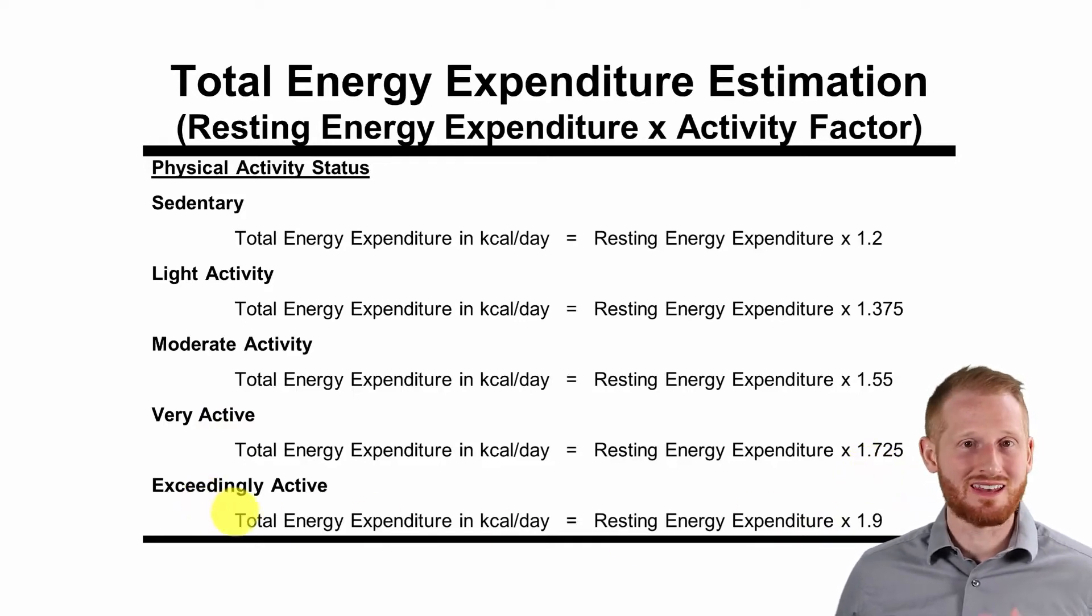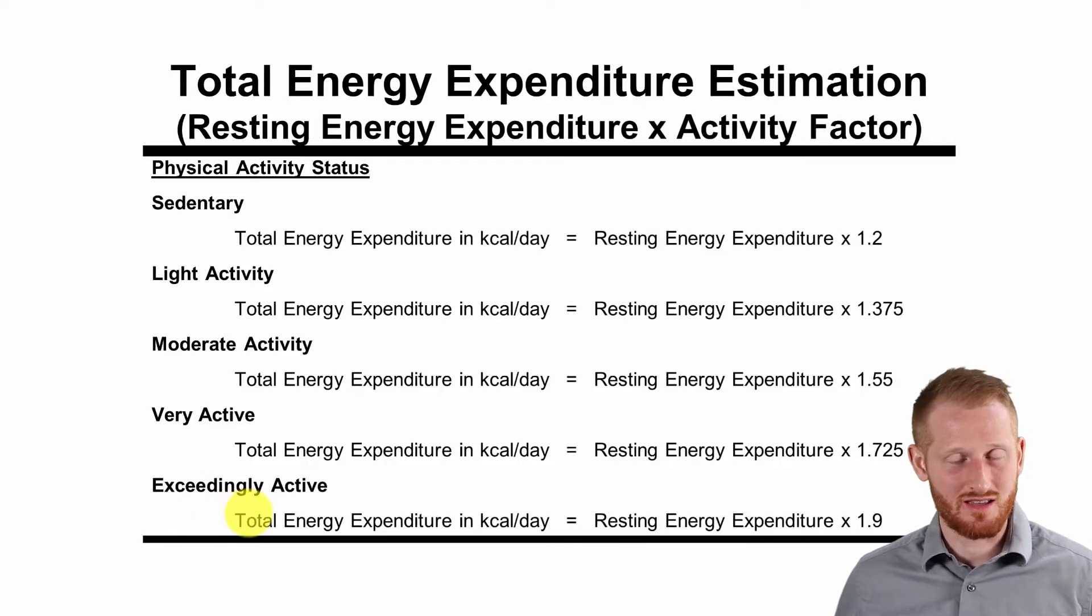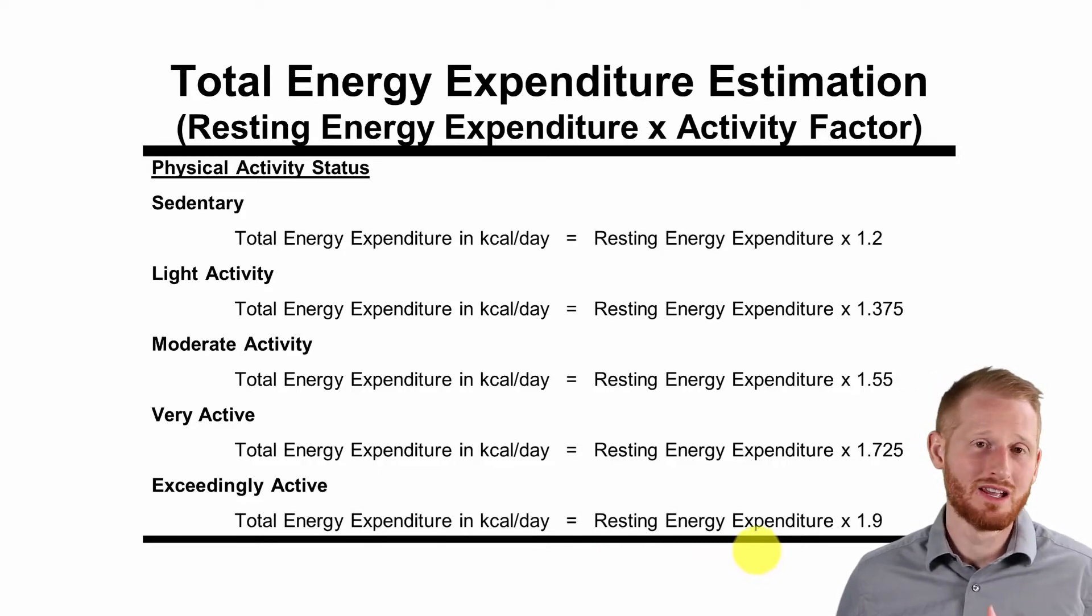And then exceedingly active would be like an athlete, somebody who exercises multiple hours a day at a vigorous intensity, or somebody who has a very intense job, working in some sort of mine or on a construction site where they're constantly carrying very heavy things all day long, that kind of person. And the activity factor for somebody who's exceedingly active is 1.9.